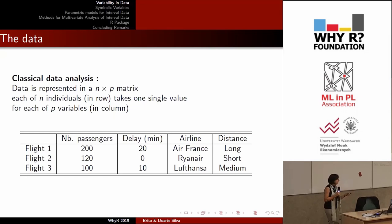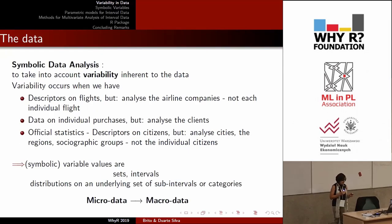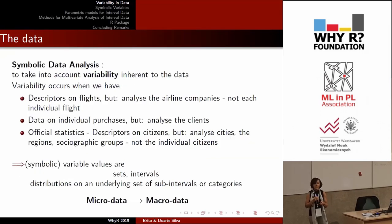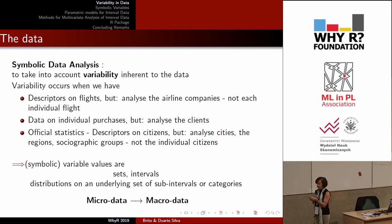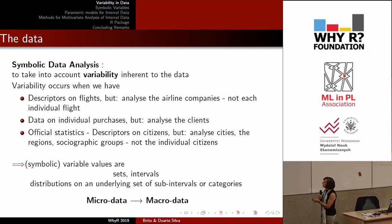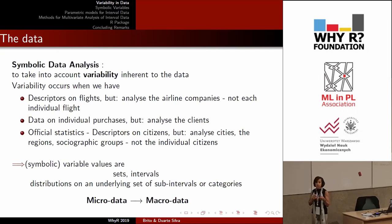This is not the case when we want to take into account variability. Symbolic data analysis developed a framework for this. For instance, instead of describing individual flights, we want to describe the airlines, taking into account all the information for all flights observed for each airline. Or in a marketing application, when we have data on many individual purchases but want descriptions of clients — for each client, taking into account all purchases recorded in the past. Or in official statistics, where data is obtained from citizens but we want analysis not of individual citizens, but of cities, regions, or sociographic groups.